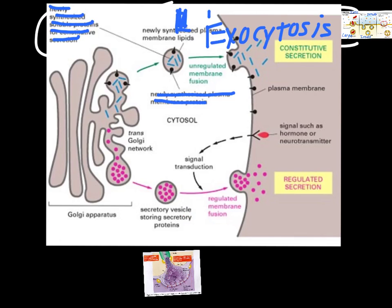Exocytosis is just the process of sending these things outside of the cell. You can see it sorts the little blue guys from the little pink guys — these are different kinds of proteins. The pink ones get bundled into their own vesicle and end up leaving. Remember, all a vesicle is is just part of the membrane — part of the plasma membrane, just like on the outside of the cell. That vesicle moves to the outside of the cell, and when it reaches the cell membrane, it fuses to it because they're both made of phospholipids. Once it fuses, it pushes its contents outside the cell.